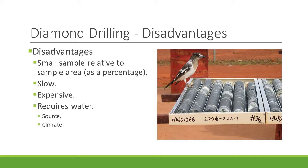Diamond drilling is, however, expensive and slow, and it provides a relatively small sample relative to the sampling area. One of its major drawbacks is that diamond drilling requires water to lubricate the bit, to stop it overheating, and to clear cuttings away from the bit. In Canada, this is challenging for two reasons. Water can be extremely scarce, particularly in mountainous areas. It's common to source water from up to 2 kilometers from the drill, which necessitates a lot of water line and several pumps, as well as a dedicated person to ensure adequate water supply 24 hours a day, 7 days a week.